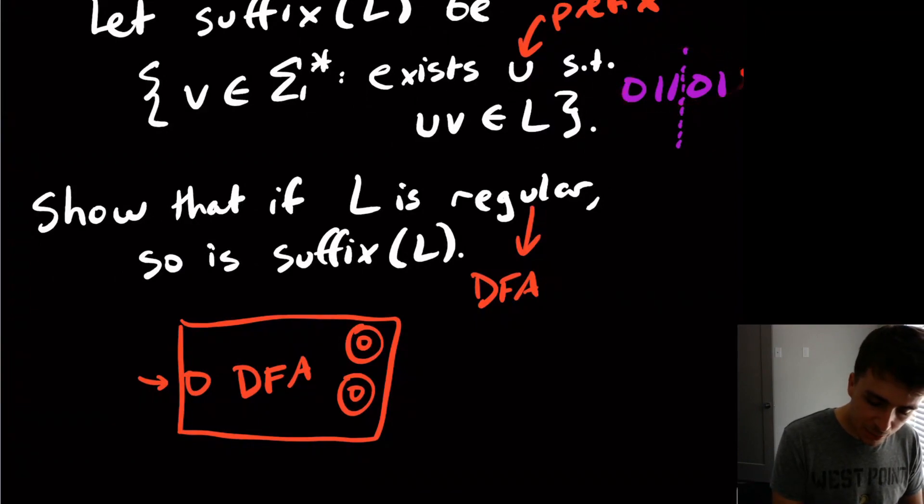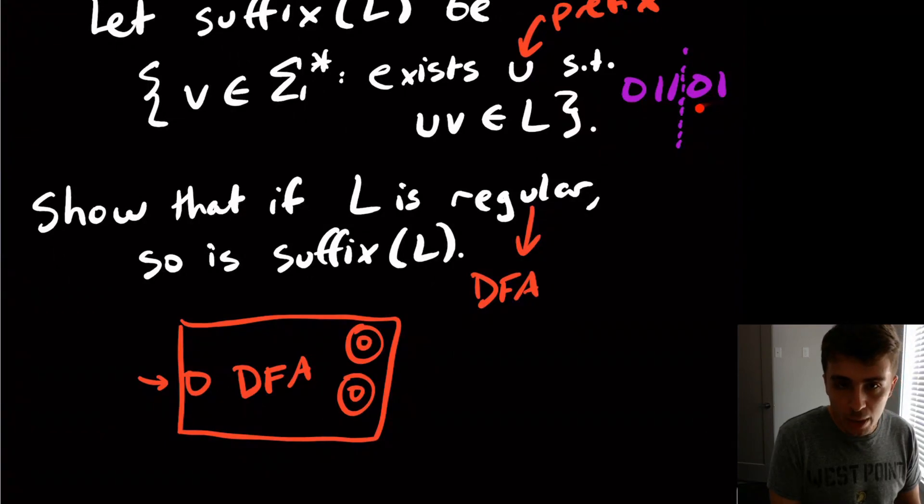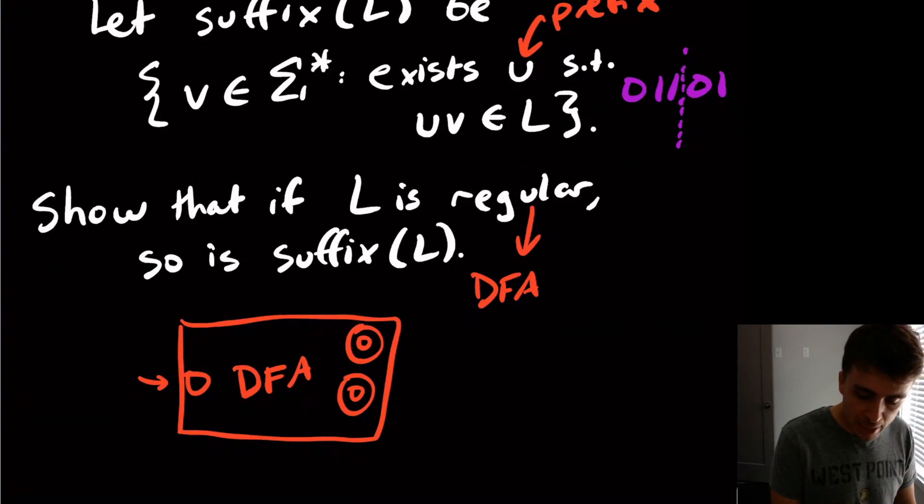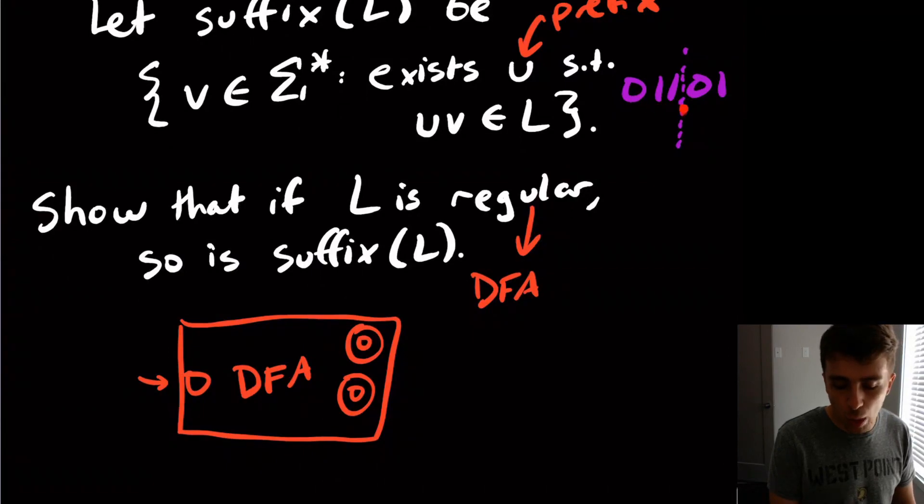But look at this example. The 01 here is a suffix, but also 101 or 1101. There are many possible suffixes that we could have chosen. So it's not a matter of whether we could just pick a particular suffix. It's just that any possible suffix could be chosen. So what we want to do is to be able to non-deterministically guess where this split is actually going to occur.